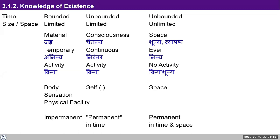We said that existence is in the form of coexistence, which is ever-present. In this coexistence, there are units which are submerged in space. The units are limited in size — they have activity, they are active. Space, on the other hand, is unlimited in size, it is all-pervading, and it has no activity. This is the major difference between units and space.